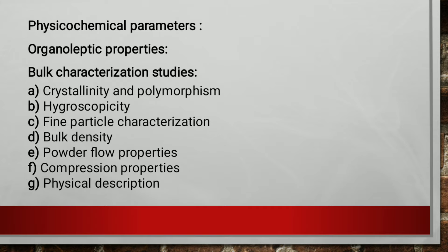Bulk characterization studies include studying the drug to determine whether it is crystalline, amorphous, or polymorphic in nature. Crystalline forms have a definite ordered internal structure. They are more stable than amorphous forms as they have less internal energy, and they have lesser solubility compared to amorphous forms. Crystalline forms also have less inclination to change their form during storage.